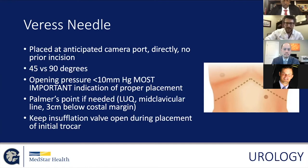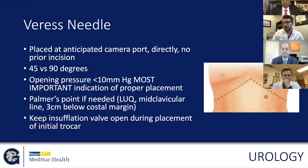The drop test and aspiration test — I've stopped doing those. I read a paper that the sensitivity is only 40%, and I've had plenty of times where the drop test works but I'm in the wrong place. So I just do the opening pressure, which is the most important indication of proper placement — should be less than 10 millimeters, and in reality less than 5 millimeters of mercury. If you're not having good luck, there's Palmer's point in the left upper quadrant, or you can use the right upper quadrant, modified midclavicular line, three centimeters below the costal margin — this has a lower risk of injury to bowel or vascular structures.